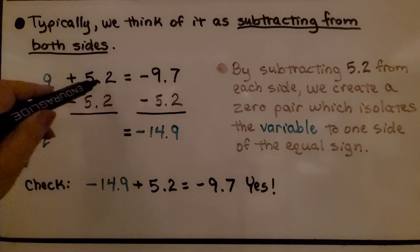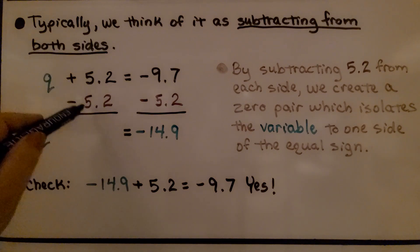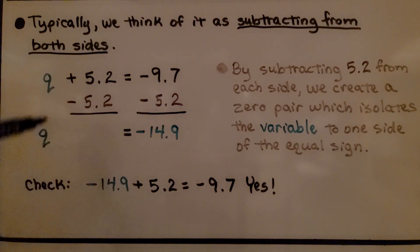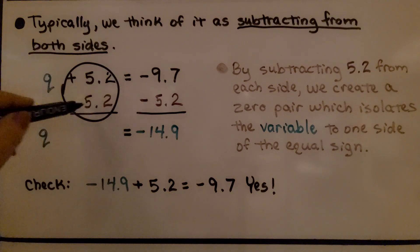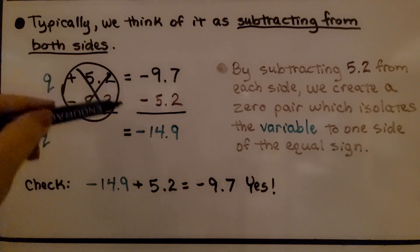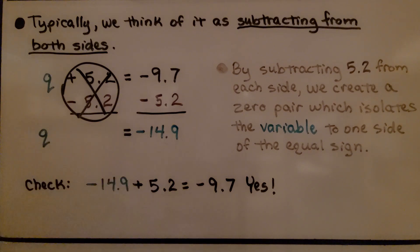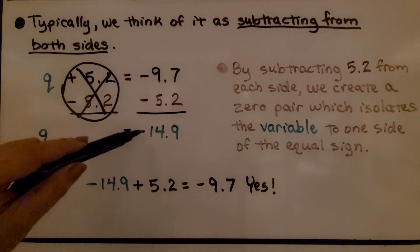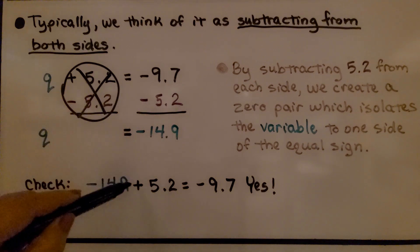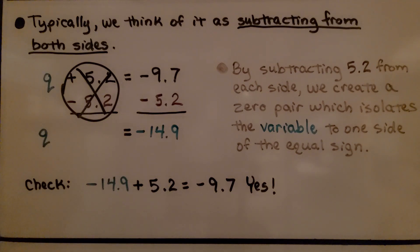If we have q plus five and two-tenths is equal to negative nine and seven-tenths, by subtracting five point two from each side, we create a zero pair — positive five point two minus five point two — which isolates the variable to one side of the equal sign. Now we just do negative nine point seven and negative five point two, which gives us negative fourteen point nine. We can check it by going backwards: negative fourteen point nine plus five point two equals negative nine point seven. So yes, we did it correctly.